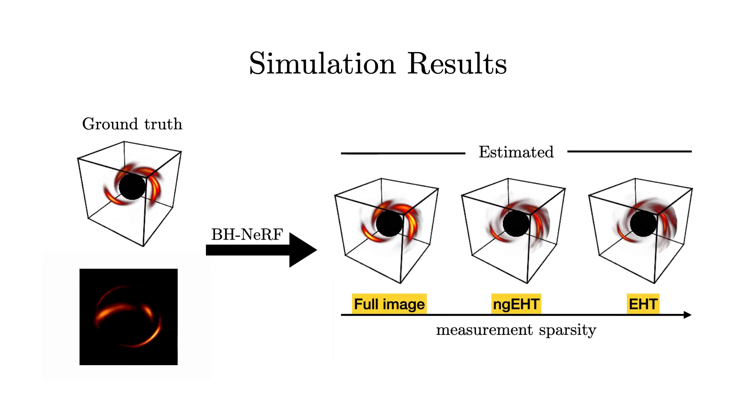To analyze the effects of measurement sparsity, we simulate measurements from additional telescopes at potential sites for the next generation EHT, or NGEHT for short.